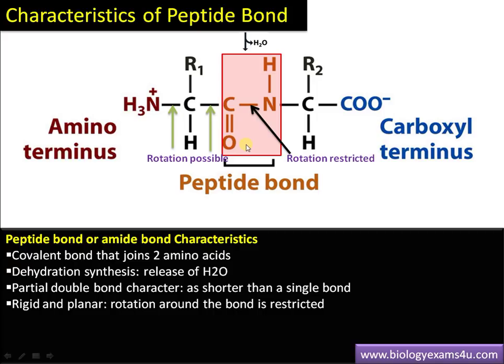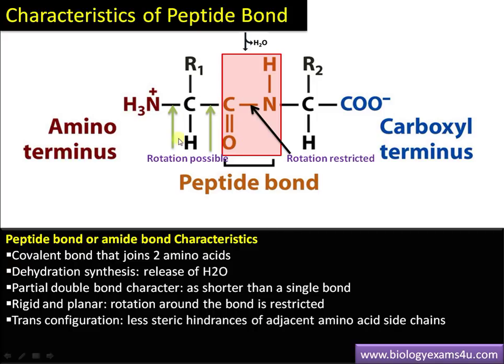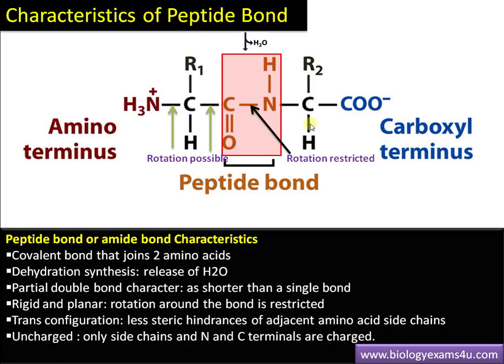This bond is in the trans configuration, meaning the C=O and NH are not in the same plane — one is below and the other is above. The advantage of the trans configuration is that side groups, which can sometimes be bulky like tryptophan or proline, are kept apart. Trans configuration reduces the steric hindrances of adjacent amino acid side chains.